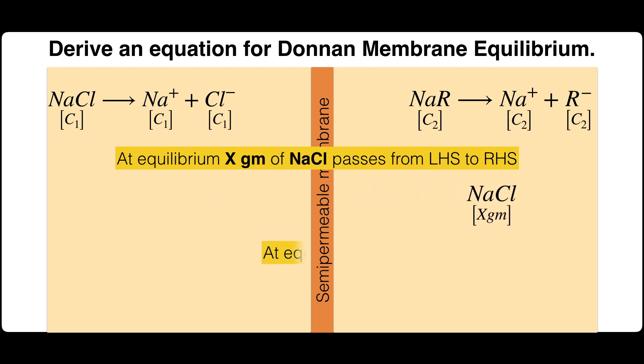Therefore, the concentrations of sodium and chloride ions at equilibrium at left-hand side are C1 minus X, while the sodium concentration on right-hand side is C2 plus X and the concentration of R minus is C2, while there is extra chloride ions arriving from the left-hand side.